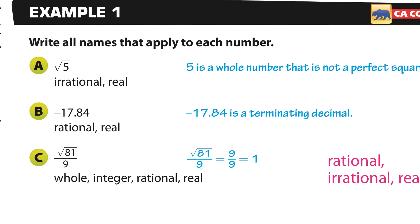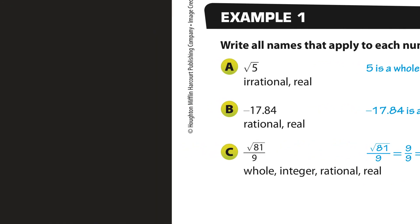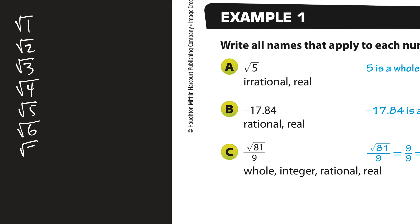Let's classify these. We have the square root of 1 through the square root of 9. The square root of 1 — what times itself is 1? 1 is. Square root of 4: 2 times 2 is 4. Square root of 9: 3 times 3 is 9. These are the perfect squares.